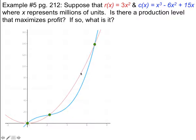We want to avoid the production level where we're not making any profit. To maximize profit, we want to see where revenue is greatest and cost is least — in other words, where the separation between these two functions is the greatest. We have two regions: one where costs exceed revenue, which represents losses, and one where revenue exceeds costs, which represents profits. We need to find where that gap is the biggest.